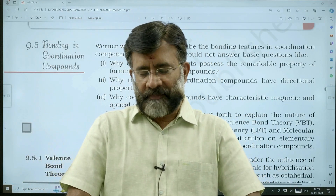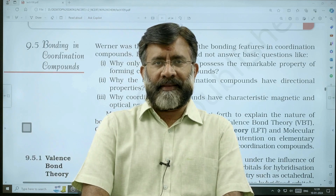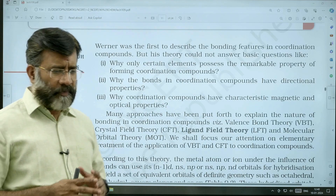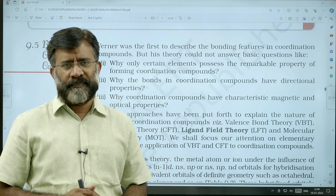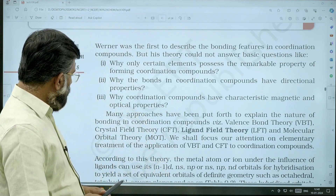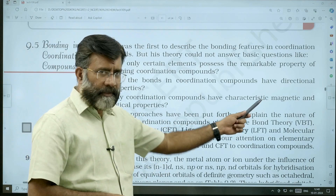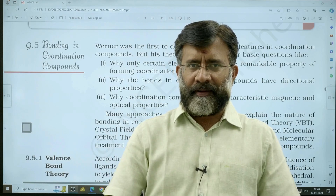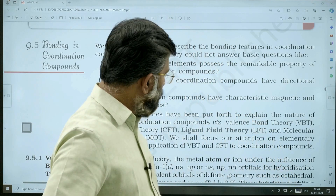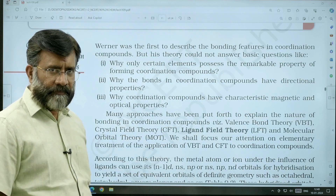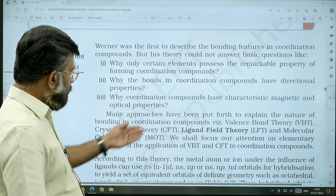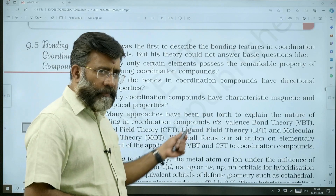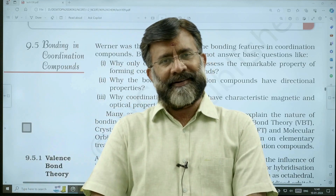The important theories we are dealing in coordination compound formation — some of these theories were already dealt in the 11th standard chapter on chemical bonding. VB theory is learned in the chapter on chemical bonding, but we discuss it in detail regarding complex compound formation. Crystal field theory is a new one. Ligand field theory we do not discuss in the chapter. Molecular orbital theory has also been discussed in chemical bonding.